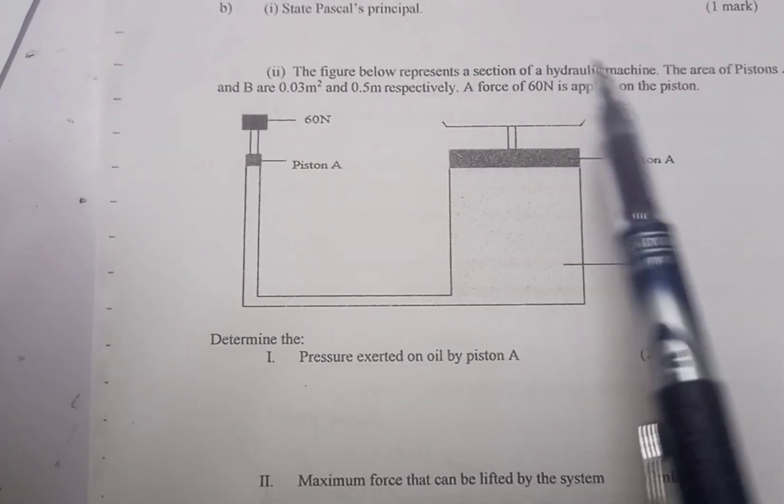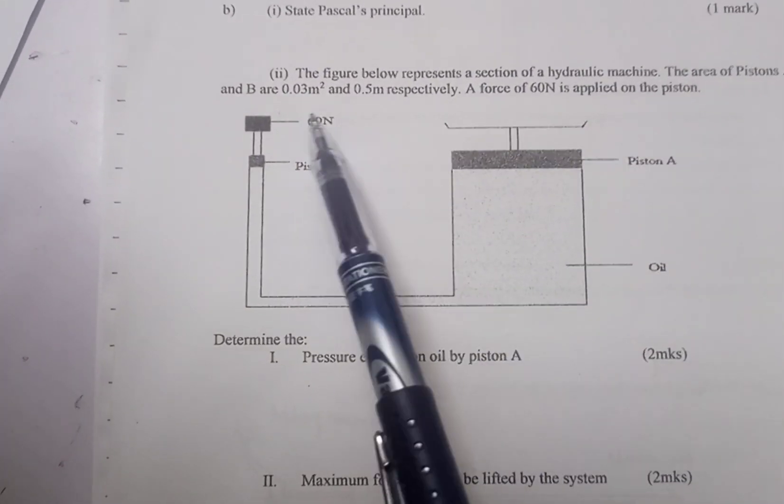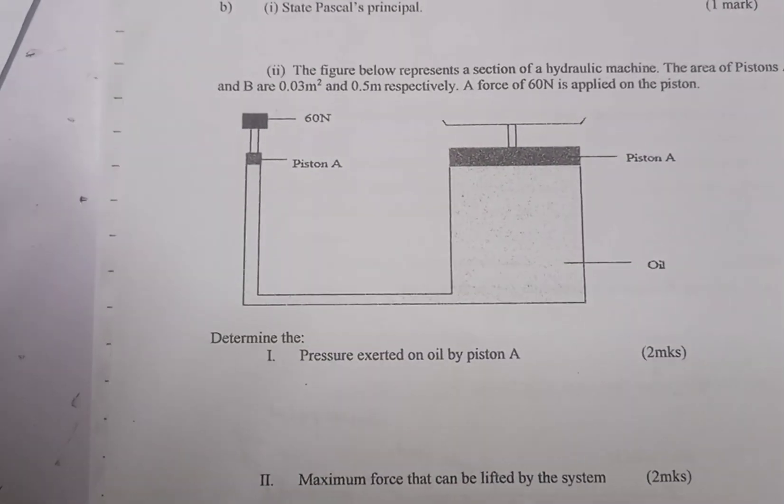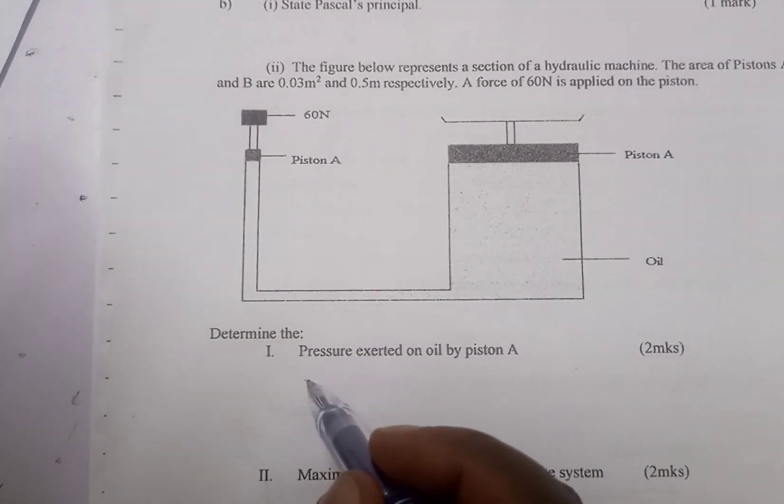Part two: The figure below represents a section of a hydraulic machine. The area of the pistons is 0.03 m² and 0.5 m² respectively.